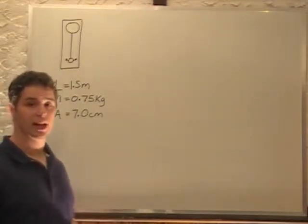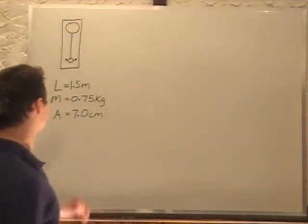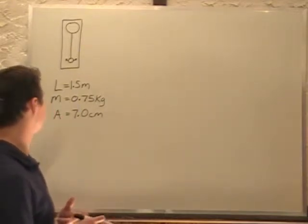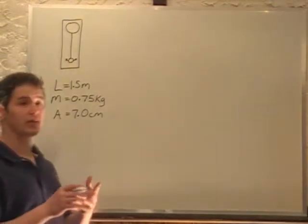So kinetic energy is 1/2 mv squared. We don't know v. V can be figured out by amplitude times omega.